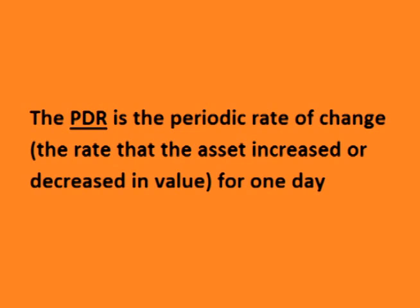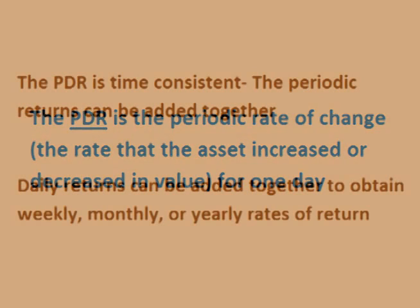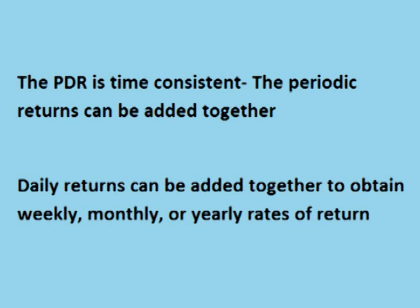It is the continuously compounded rate of change for one day. In finance, the periodic daily return is often used instead of the simple percent change because the periodic daily return is continuously compounded, which means that it is time consistent. This makes it more useful for things like price modeling, correlation calculations, and risk management.